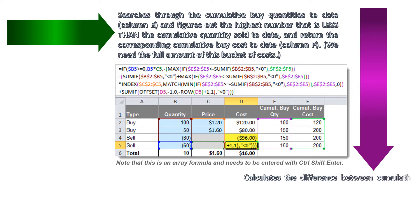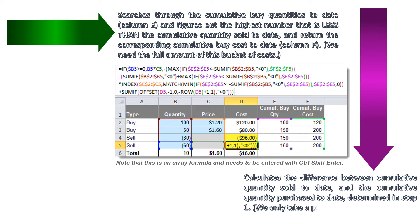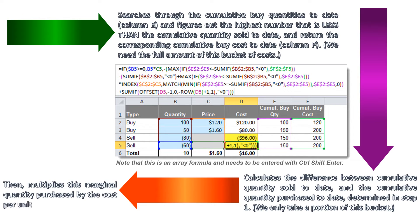Secondly, calculates the difference between cumulative quantity sold to date, and the cumulative quantity purchased to date, determined in step 1. We only take a portion of this bucket. Then, multiplies this marginal quantity purchased by the cost per unit for this row.